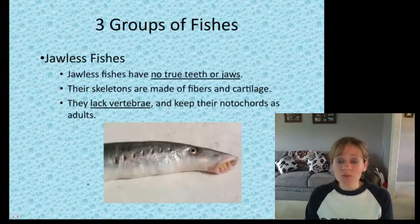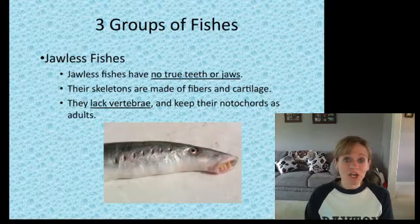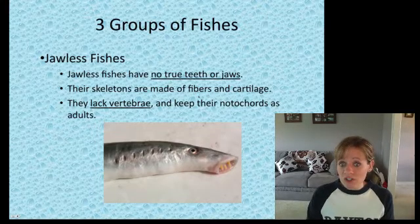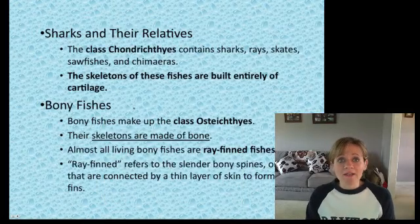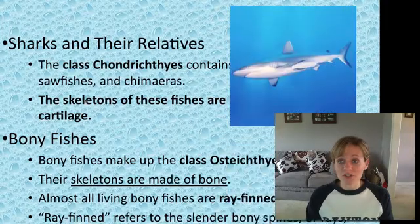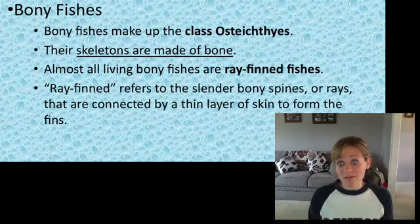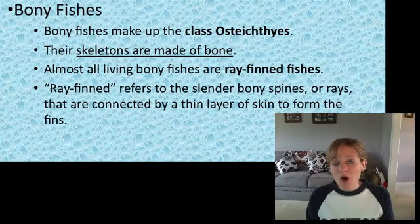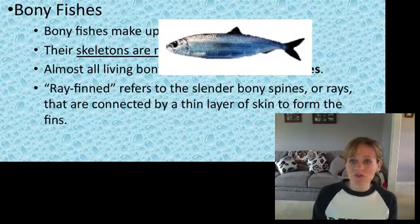There are three groups of modern fishes. The first is the jawless fish — the most primitive group. They have no true teeth or jaws, their skeletons are made of cartilage, and they lack a vertebra, so they wouldn't be considered vertebrates, but they are chordates. Then there are sharks and their relatives — chondrichthyes — including sharks, rays, skates, sawfishes, and chimeras, whose skeletons are made of cartilage. And then the bony fish, osteichthyes, whose skeletons are made of bone. Almost all living bony fish are ray-finned fishes, referring to their slender bony spines — most fish you're familiar with would be bony fish.